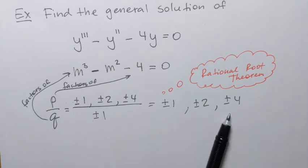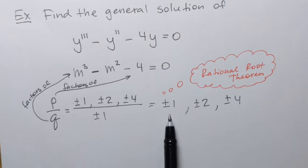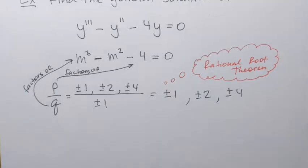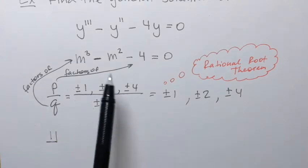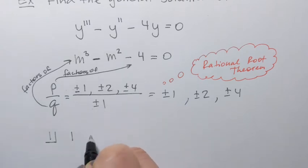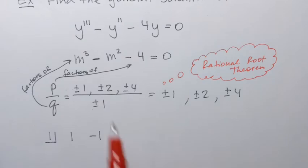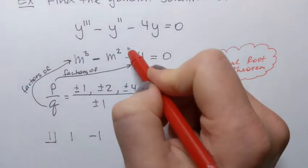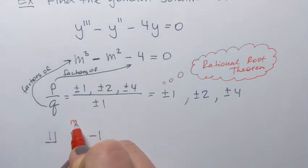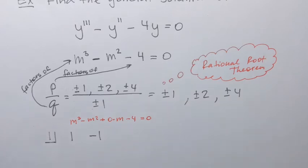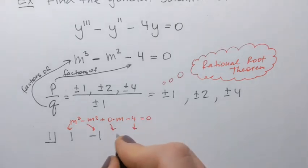We're going to check which of those numbers is a root by performing synthetic division. We'll start with positive 1. To perform synthetic division, I need to take all the coefficients of the polynomial on the left-hand side: 1, then negative 1. Since the m-to-the-first term is missing, I'll rewrite the equation as m³ - m² + 0·m - 4 = 0, so the coefficients are 1, negative 1, 0, negative 4.